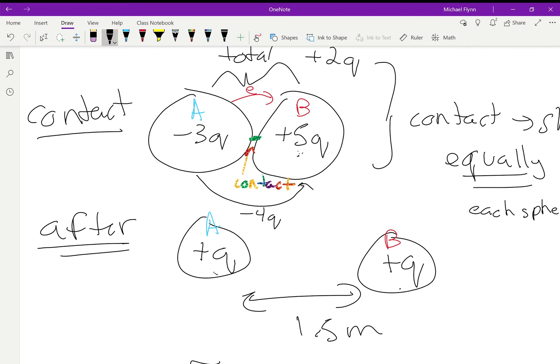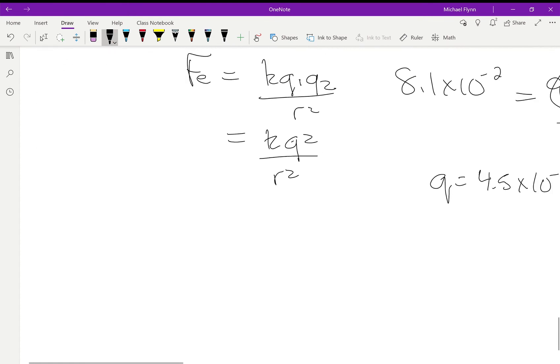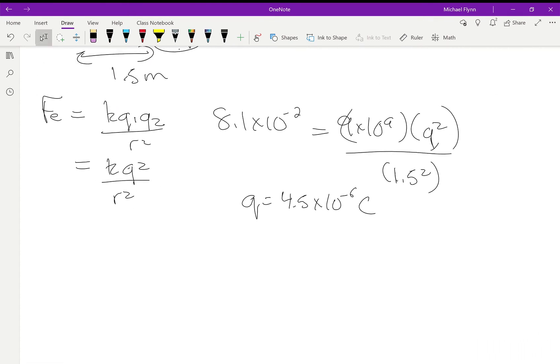If negative 4q made its way over to here, then what will happen is this guy lost a negative 4 and became positive 1q, and this positive 5 gained a negative 4 and went down to positive q. Makes sense? Because 5 minus 4 is 1, and negative 3 minus negative 4 is positive 1. They both end up with the same charge. So the deal is 4q are transferred.